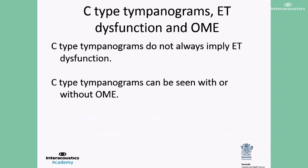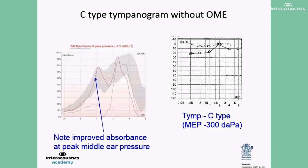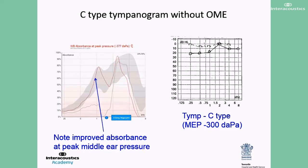One of the common statements made by audiologists is that C-type tympanograms denote negative middle ear pressure and possibly eustachian tube dysfunction. However, C-type tympanograms do not always imply eustachian tube dysfunction — they can be seen with or without middle ear effusion. Ambient absorbance can be especially useful in determining ears with and without middle ear effusion. In this slide, the patient had a C-type tympanogram with middle ear pressure of minus 377 dkPa. Hearing was reasonably within normal range with some conductive component in the low frequencies. Looking at the comparison of wideband absorbance and wideband tympanometric curve, there is a large difference between the two conditions.